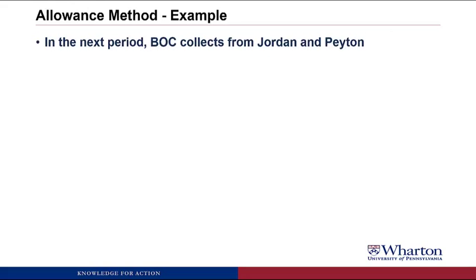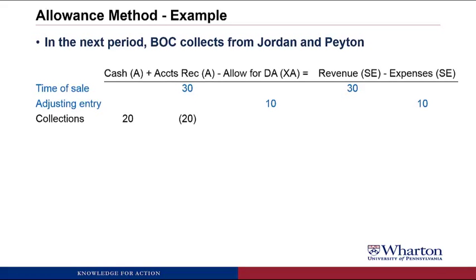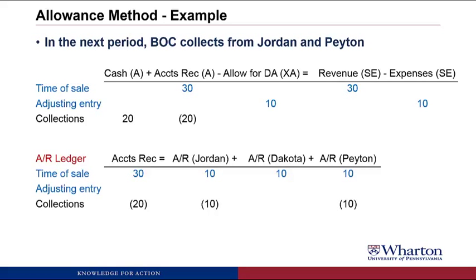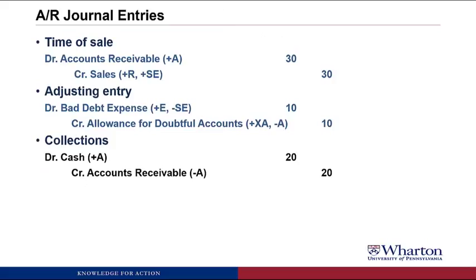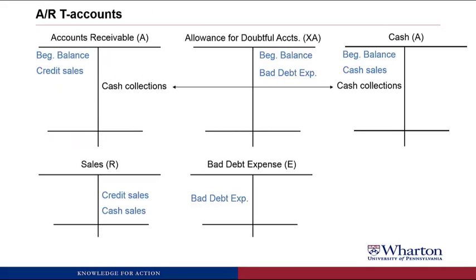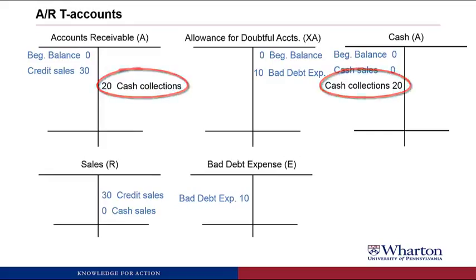In the next period, BOC collects cash from both Jordan and Payton. Cash goes up by 20 because we get $10 from each. Accounts receivable goes down by 20 because we're no longer owed that money. In the accounts receivable ledger, Jordan and Payton's accounts are reduced by 10 each — now they owe us zero. The journal entry is debit cash 20, credit accounts receivable 20. In the T-accounts, the credit to accounts receivable and the debit to cash are each 20.